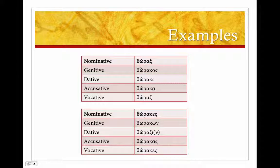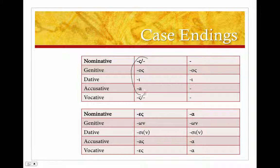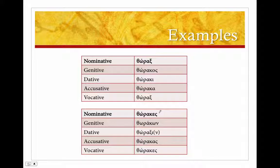So thorax, thoracos, breastplate. We've got our stem thorac. So genitive thoracos, thoraki, thoraca, thorax, we're just adding the endings that we had in the previous slide to our stem. And then we've got the plural: thorakes, thorakon, thoraxin, thorakas.